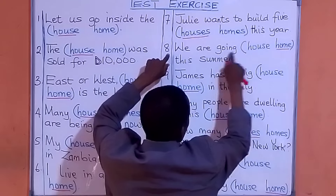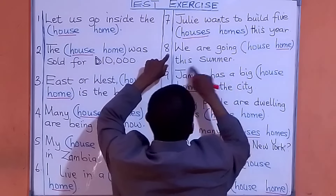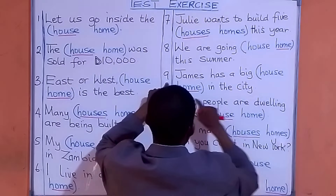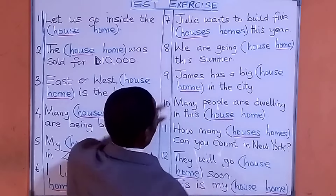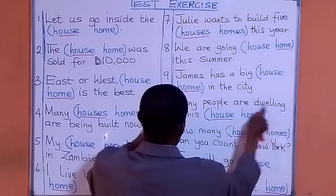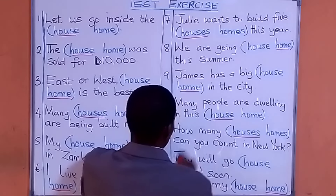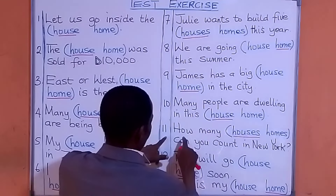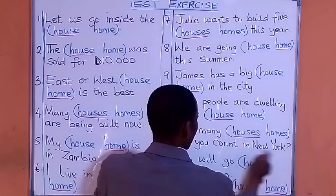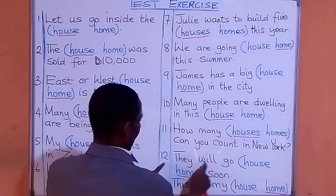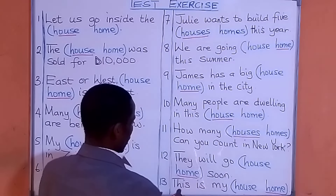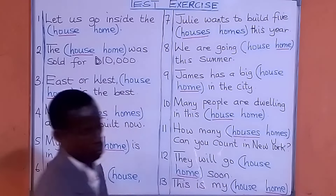We are going home this summer. James has a big home in the city. Many people are dwelling in this house. How many houses can you count in New York? They will go home soon. This is my home.